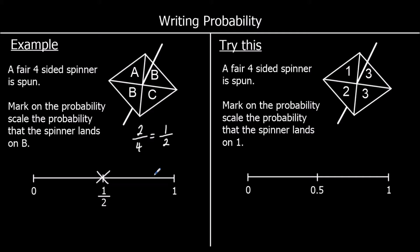There's a question for you to try. Give this one a go. Again, there's a four-sided spinner. Mark on the probability scale the probability that the spinner lands on 1. There is one '1' out of four options, so the probability is one quarter — one in four. On the scale, one quarter is halfway between 0 and 0.5, which is 0.25 as a decimal.